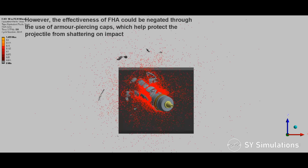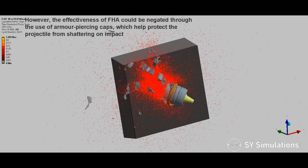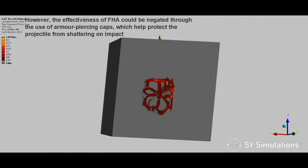However, the effectiveness of face-hardened armor could be negated through the use of armor-piercing caps, which helped protect the projectile from shattering on impact.